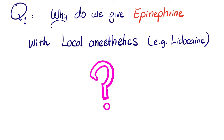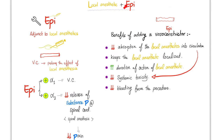Let's answer the question of the previous video: why do we give epinephrine with local anesthetics? First, don't forget that epinephrine is a vasoconstrictor. It can prolong the effect of local anesthesia.